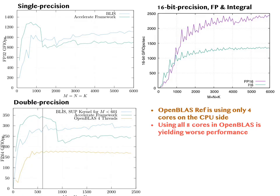These three graphs show the performance from our AMX kernels. The leftmost is single precision performance, the bottom left is double precision performance, and the right-hand side is half precision performance — for which we only have a BLIS graph. The left panels include both BLIS performance and the Accelerate framework, which is Apple's vendor BLAS. For large matrix sizes, our BLIS kernel is even surpassing the vendor BLAS. The half precision floating-point throughput reaches 2.5 teraflops.